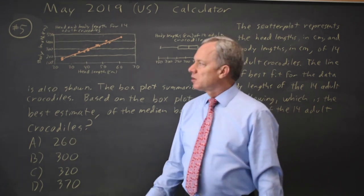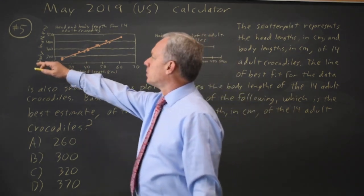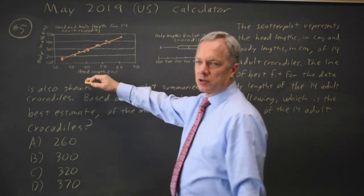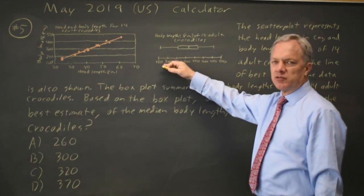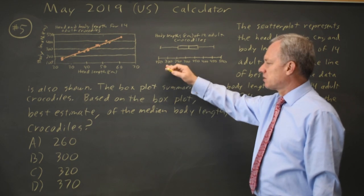This is calculator question number five. College Board gives us a scatter plot showing body length versus head length for adult crocodiles and a box plot of body length for the same 14 adult crocodiles.